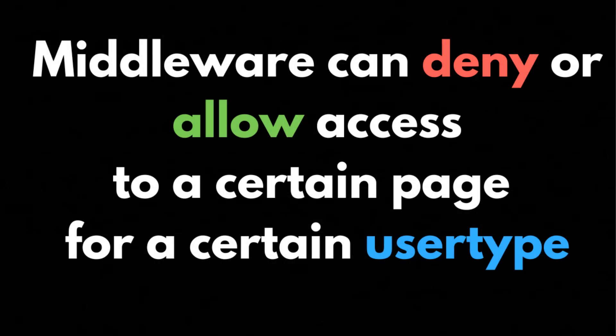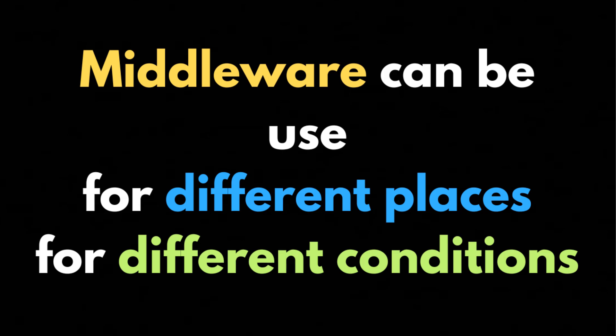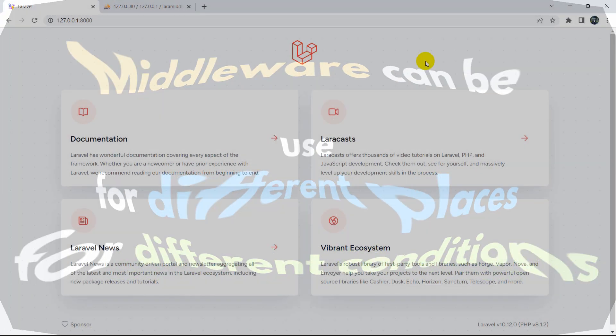Let's say we have a page in our website and we only want the admin to have access to that page — then we need to use middleware. Middleware will allow us to make conditions so that regular users will not have access to that certain admin page. We can also use middleware for other conditions, for example if a user is not over 18 years old, we will not let that user access a certain page.